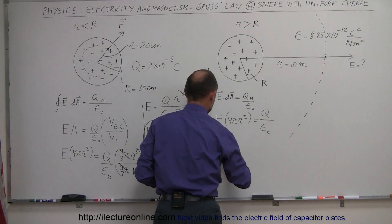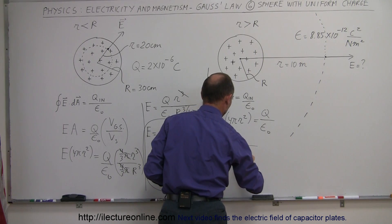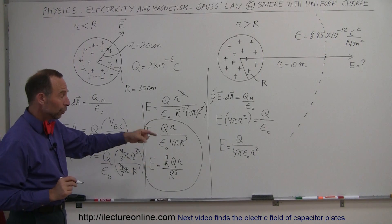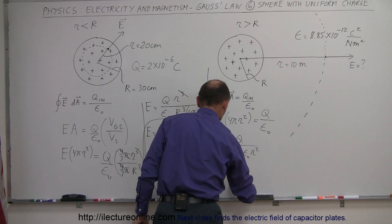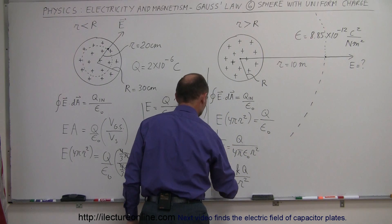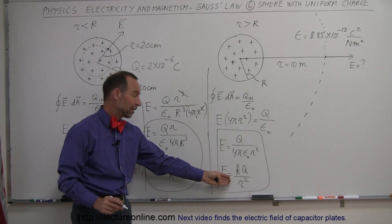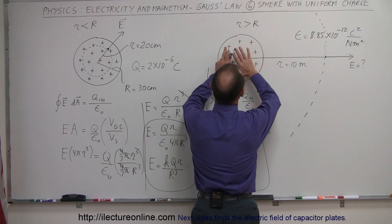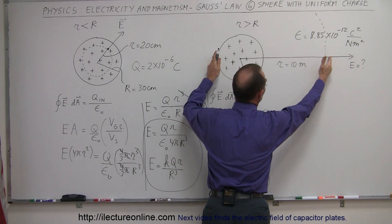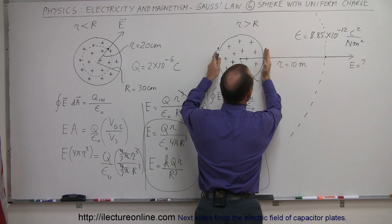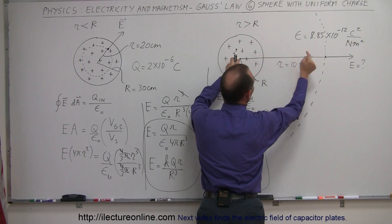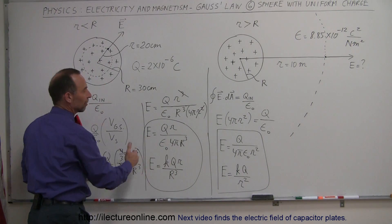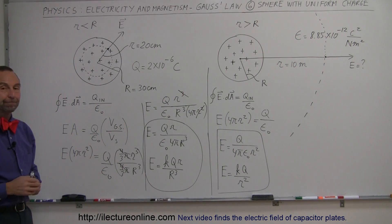Simplifying: E equals Q divided by (4π epsilon sub-naught times r²), which can be written as E equals KQ over r². This is exactly the format of the electric field for a point charge Q at distance r. Even though the charge is evenly distributed inside a solid sphere, if you're far enough away, it acts like a point charge. So inside the sphere use E = KQr/R³, and outside use E = KQ/r².